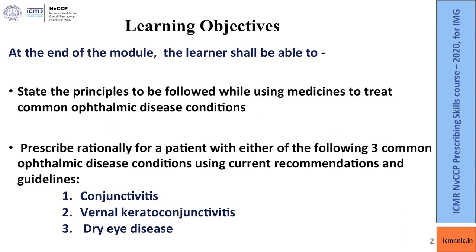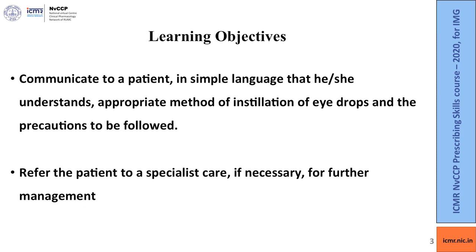At the end of this module, we hope that you as a learner will be able to prescribe rationally for three common ophthalmological conditions: conjunctivitis and vernal keratoconjunctivitis, which we have covered in this lecture. Information about dry eye disease has been provided separately in the reference material which you can download as a PDF. We also hope that you will be able to communicate to a patient in simple language the appropriate method of installation of eye drops and the precautions to be followed. Most importantly, we hope that you will be able to refer the patient to a specialist if necessary for further management.